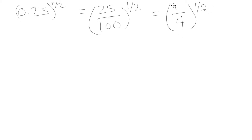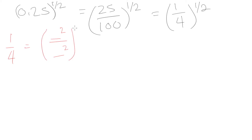Whenever we have an exponent that is a fraction, we need to convert the numerator and denominator into forms where multiplying them out lets us cancel the fraction. So let's try to convert 1 quarter into a form where we have two numbers each raised to the power of 2. If we have two numbers raised to the power of 2 and then raise the whole thing to the power of 1 half, we multiply each exponent by 1 half, giving us 2 over 2, which equals 1.